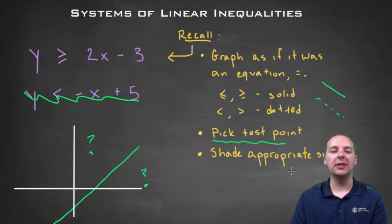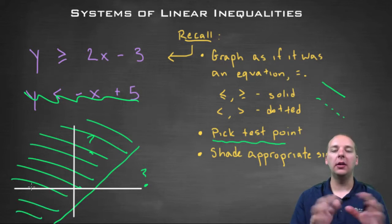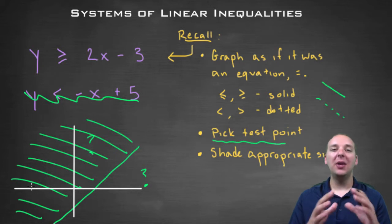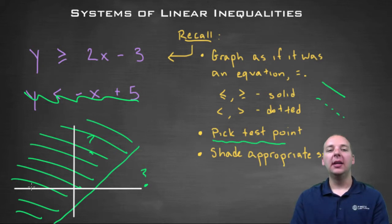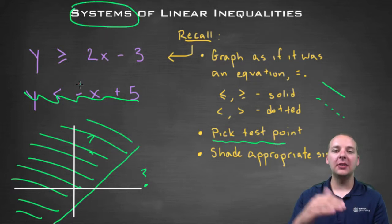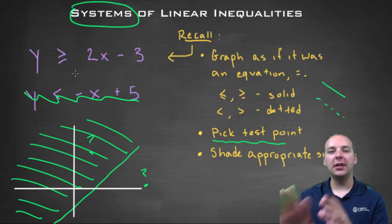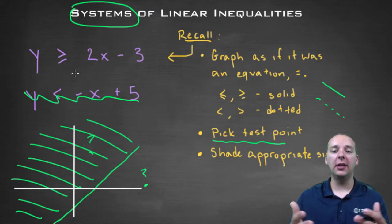So you shade the appropriate side, and once you do that you'll get a whole region in the plane of solutions. That's just for that one inequality, not for the system. But now it's quite simple — if you're looking for the solutions to a system of inequalities, you just do that same process for all of your inequalities. You'll have a shaded region for the first inequality, a different shaded region for the second, and maybe a third shaded region if you have a third inequality.